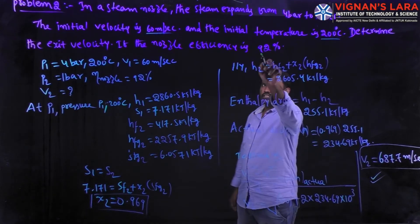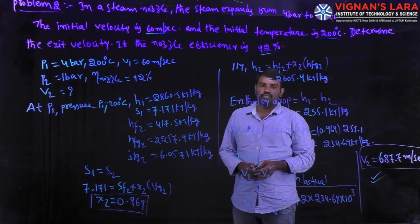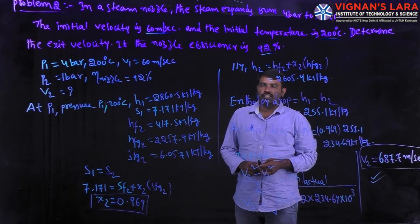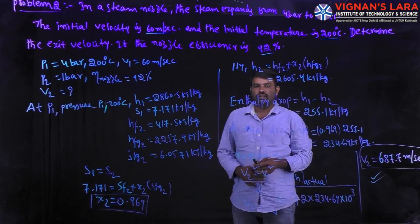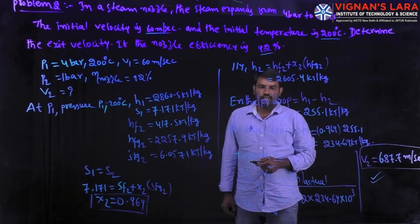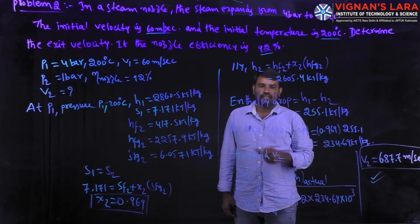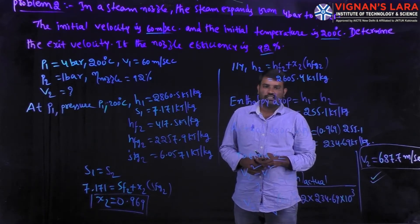The nozzle efficiency is 92 percent. Efficiency of nozzle is defined as actual enthalpy drop divided by theoretical enthalpy drop. The actual enthalpy drop is always less than the theoretical enthalpy drop because of friction losses during expansion inside the nozzle body. That is why efficiency is always less than 100 percent.